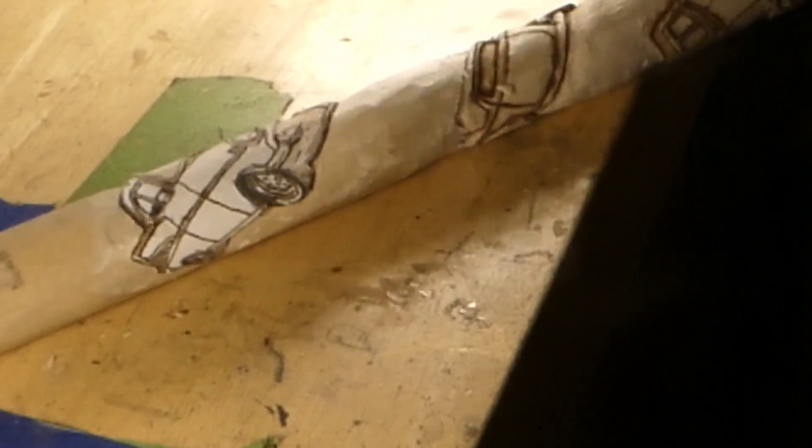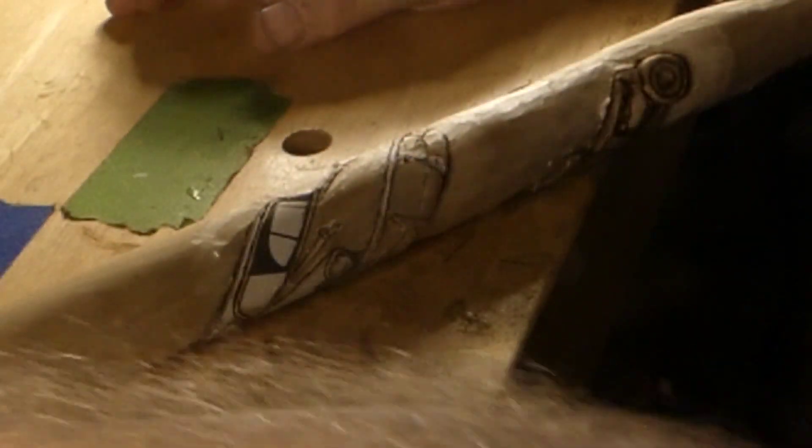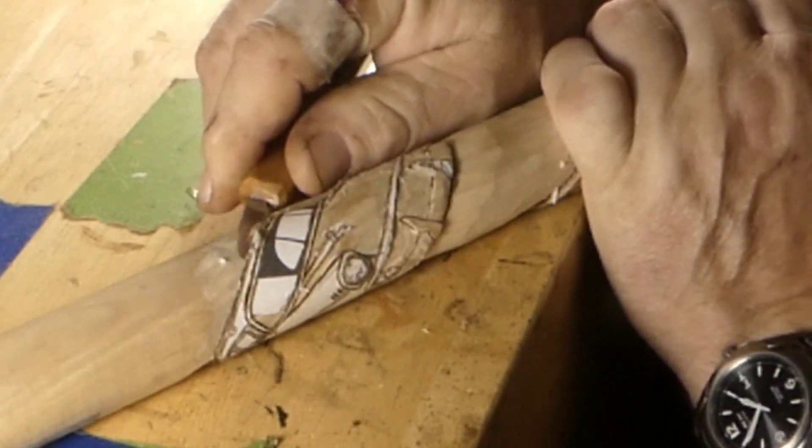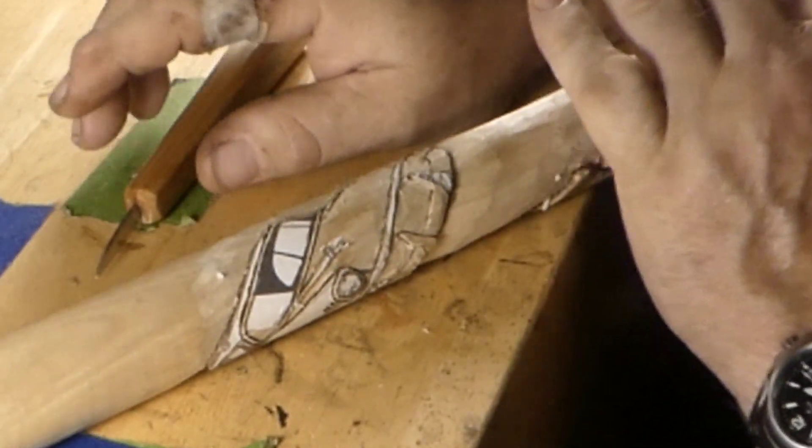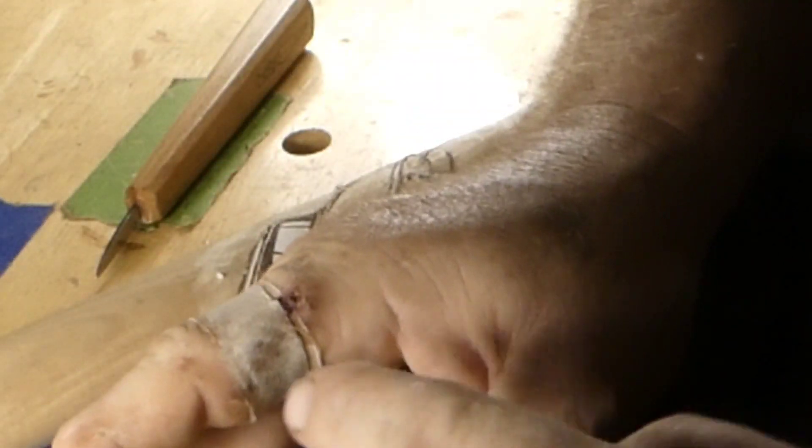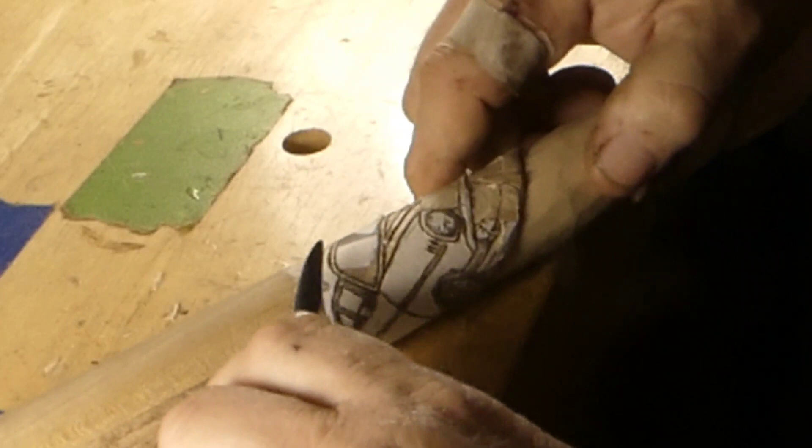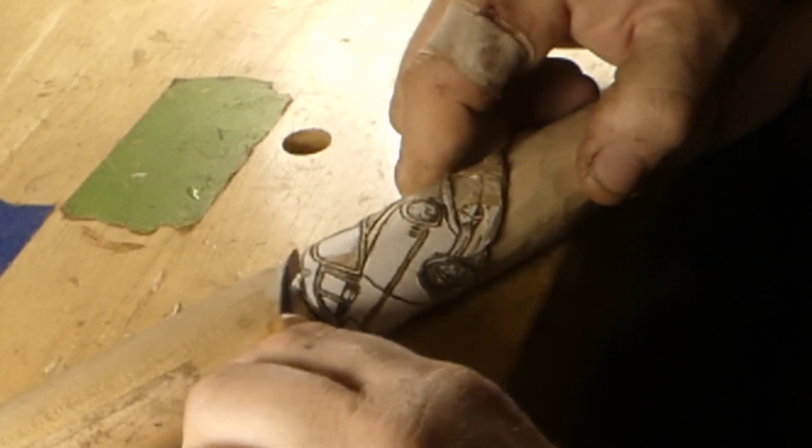This is our 57 Chevy we've been working on. Doing a little carving. You can see I chopped my finger in half right here.